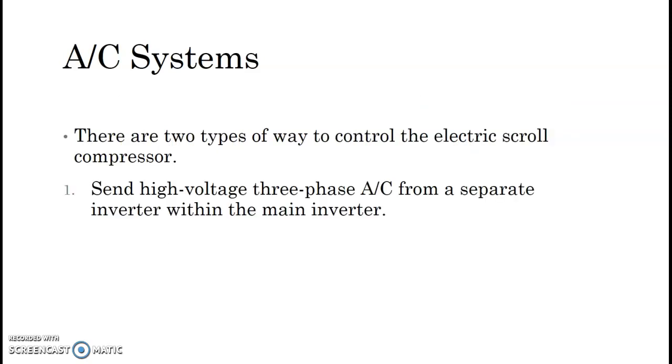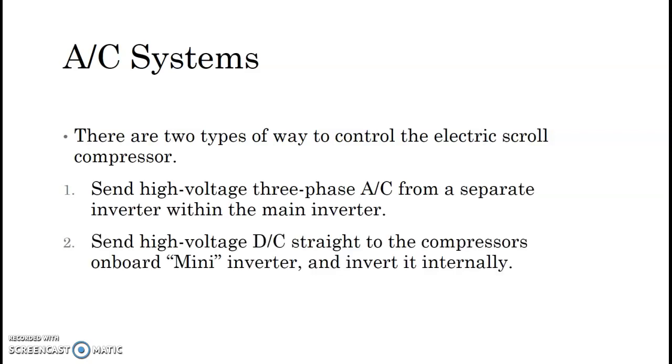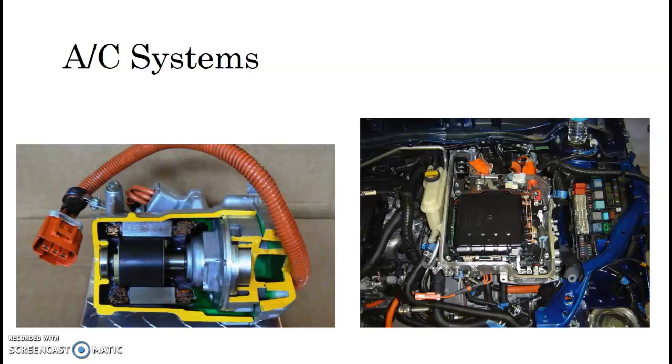So different ways that we control them. So we basically send high-voltage three-phase AC, like I mentioned, from a separate inverter within the main inverter, or we send high-voltage DC straight to the compressor, and in the compressor it has its mini-inverter. So basically what happens is that inverter is either in the main inverter or it's in the AC compressor. And you can tell by looking at the cables, like right here I have three cables coming down to this compressor, so the AC inverter is part of the main inverter. And you can see those three cables right there coming out, and it goes down to that compressor. So the inverter is inside this main inverter.